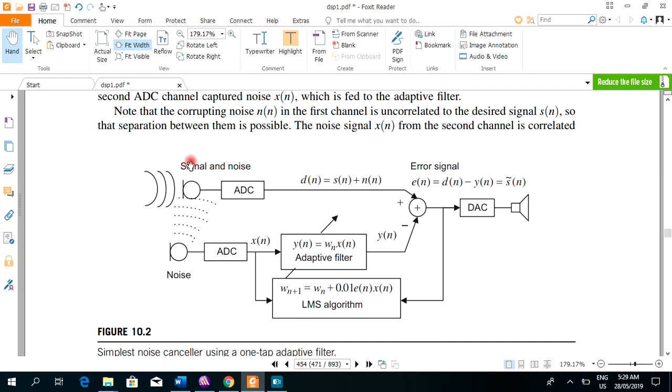Here noise and signal are summed up. After passing through analog to digital converter, this is the signal component plus noise component and the result will be the corrupted signal. That corrupted signal is passed to a summer and the second input of the summer is the output of adaptive filter.